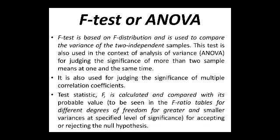ANOVA is Analysis of Variance. F-Test is based on F-distribution and is used to compare the variance of two independent samples. This test is also used in the context of analysis of variance for judging the significance of more than two sample means at one and the same time. When we have more than two samples, in that case we need to go for analysis of variance.